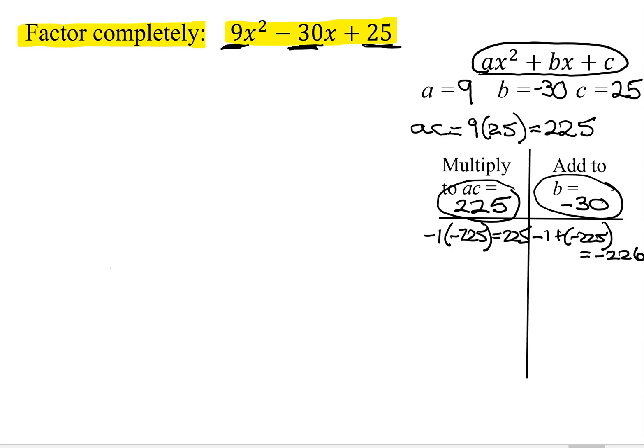So now does 2 go into 225? No, 225 is not even, so 2 doesn't go in there. Does 3 go into 225? Yes, I think it goes 75 times. Those multiply together to give me positive 225. Negative 3 plus negative 75 equals negative 78. I'm a long way away from here.